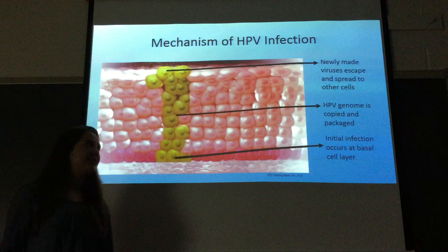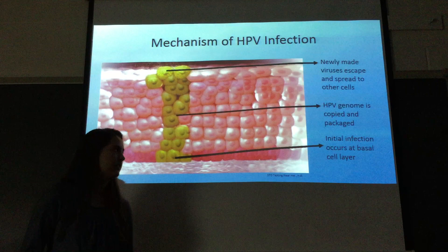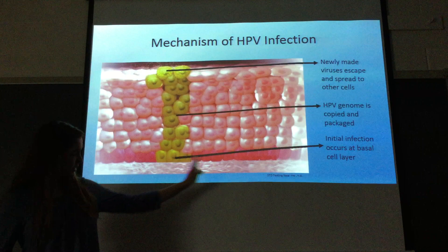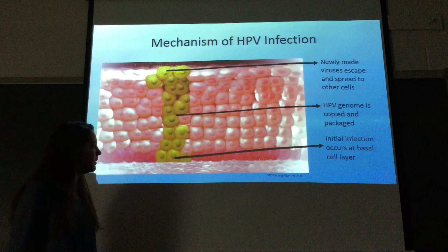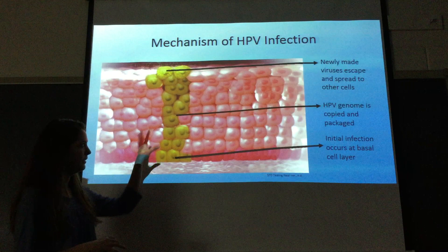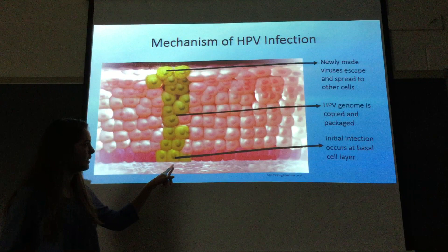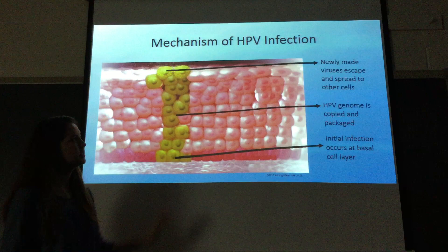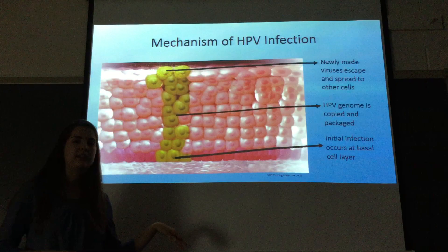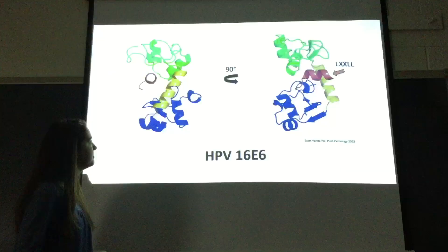The exact mechanism of HPV infection is that through cuts — very small abrasions, things you can't even see — the virus enters the skin and an initial infection occurs at the basal cell layer, which is the very bottom layer of skin. Those basal cells differentiate and turn into squamous epithelium as they rise to the surface. Once the virus infects the basal layer, the genome is copied and packaged as it moves upward, and newly made viruses escape at the surface to infect new cells.